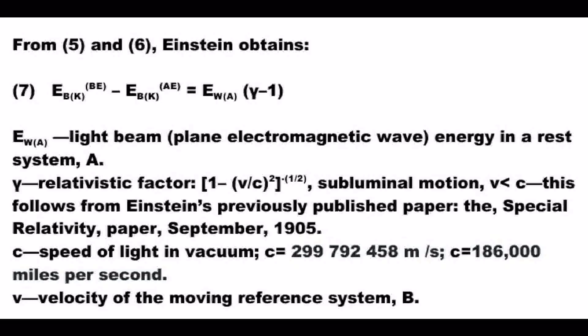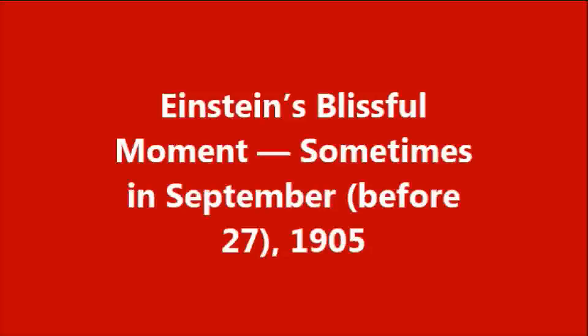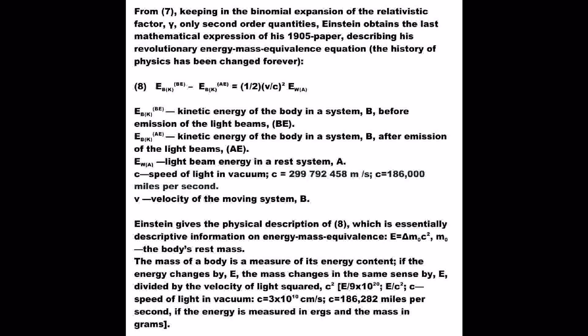From expressions 5 and 6, Einstein obtains — Einstein's blissful moment, sometime in September before the 27th, 1905. From expression 7, keeping in the binomial expansion of the relativistic factor only second-order quantities, Einstein obtains the last mathematical expression of his 1905 paper, describing his revolutionary energy-mass equivalence equation. The history of physics has been changed forever.